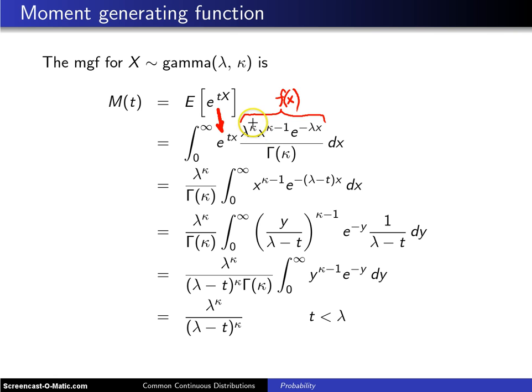Now you will notice that lambda to the kappa is free of x so it can come out in the numerator and gamma of kappa is also free of x so it can come out front of the integral in the denominator.